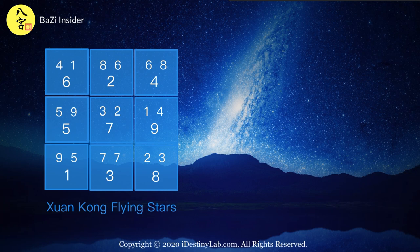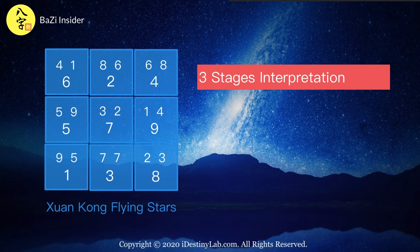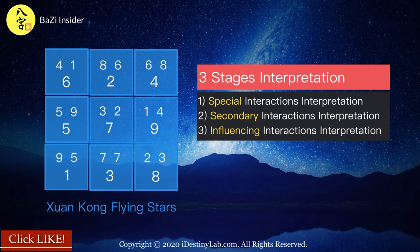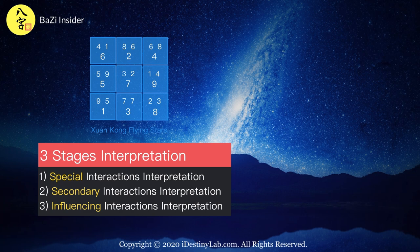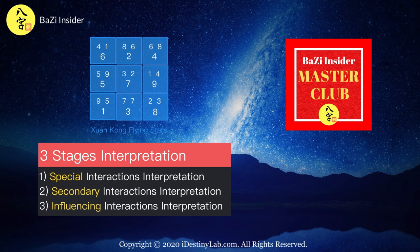Now, how do we interpret all these numbers for particular palaces inside the chart? There are many methods, from the most basic of evaluating the characteristics of each star to evaluating different interaction stages. In order to carry out a comprehensive flying star analysis, we will require three stages of interpretation: Special Interactions Interpretation, Secondary Interactions Interpretation, and Inferencing Interaction Interpretation. I will go through the basic concept of applying these three stages. More detailed videos will be pushed out progressively inside the Ba Zi Insider MasterCraft members-only video playlist. Do sign up if you have not done so — the link is provided below.